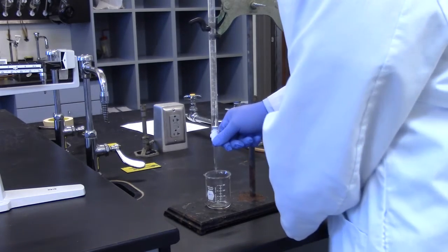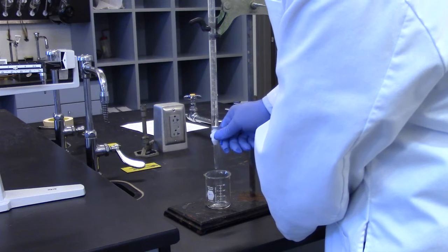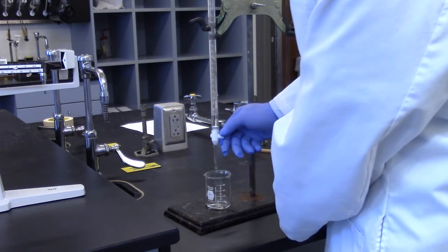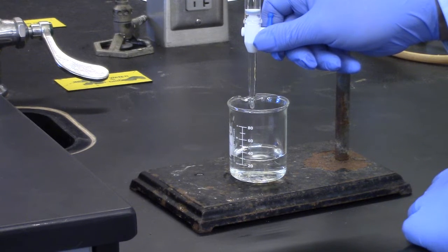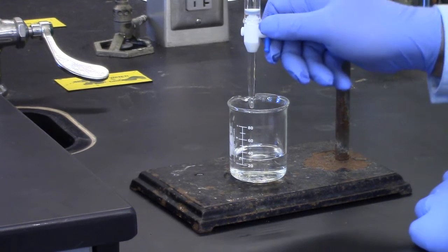Next, titrate in 10.0 milliliters of water directly into the 100 milliliter beaker. Practice using the stopcock by stopping at the 4.0 milliliter, 6.0 milliliter, and 8.0 milliliter marks on the burette so that you are confident that you can stop at the 10.0 milliliter mark.